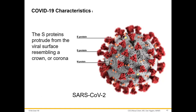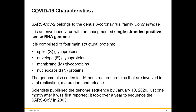This is what coronavirus looks like — the S proteins protrude from the viral surface, which resembles a crown or corona. SARS-CoV-2 belongs to the genus Betacoronavirus, the family Coronaviridae. It's an enveloped virus with an unsegmented single-stranded positive-sense RNA genome. If asked about COVID-19, you want to know it's an enveloped virus with a single-stranded positive-sense RNA genome.